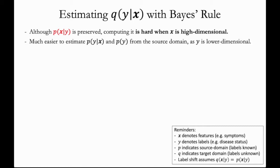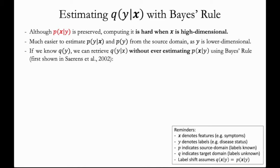By contrast, it's much easier to estimate p(y|x) and p(y) from the source domain data as y is lower dimensional. In fact, p(y|x) is just the model that we originally trained and p(y) are the class proportions. It turns out that if you are told q(y), you can find q(y|x) without ever estimating p(x|y) using Bayes' rule.